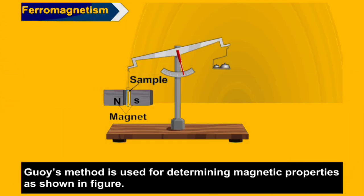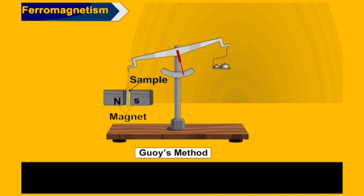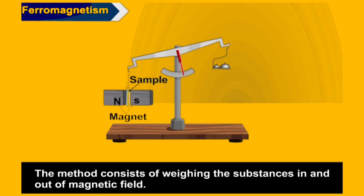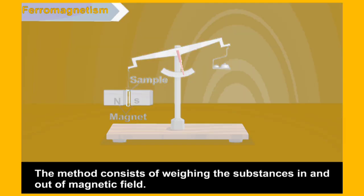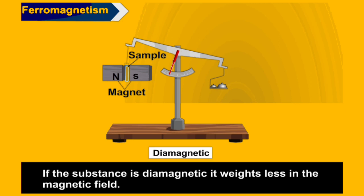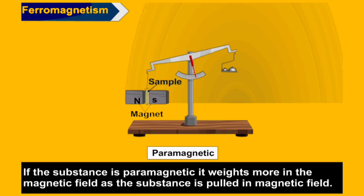The Gouy method is used for determining magnetic properties, as shown in the figure. The method consists of weighing the substance in and out of a magnetic field. If the substance is diamagnetic, it weighs less in the magnetic field. If the substance is paramagnetic, it weighs more in the magnetic field, as the substance is pulled into the field. The extent of pull is even greater in the case of ferromagnetic substances.